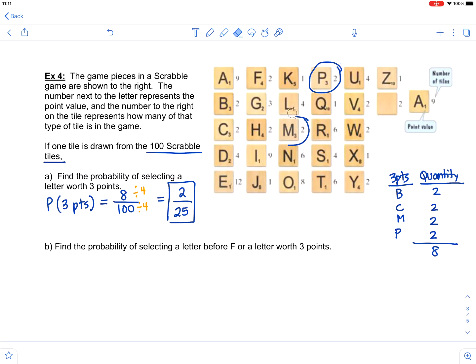When we move to part B, part B is going to be slightly different. It says find the probability of selecting a letter before F or a letter worth three points. Note that these are not mutually exclusive events.